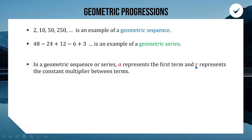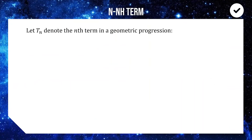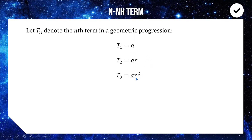Let's look at how we could form a formula to find the nth term in a geometric progression. We start with our first term being a. To get from the first term to the second term we multiply by r, so the second term is ar. Multiplied by r again gives the third term: t₃ equals ar². The pattern forming here is that the power of r is always one less than the term number.